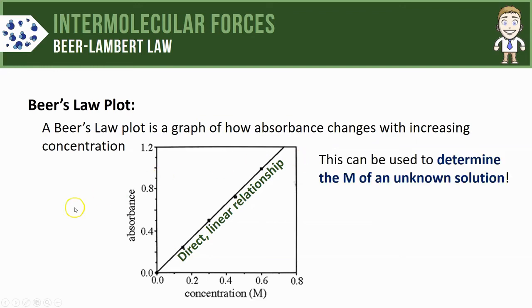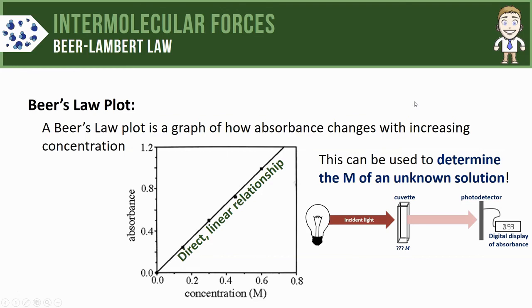So let's say we have an unknown concentration copper sulfate solution. We put it in a cuvette and test its absorbance in a spectrophotometer, and that absorbance comes out as 0.93.